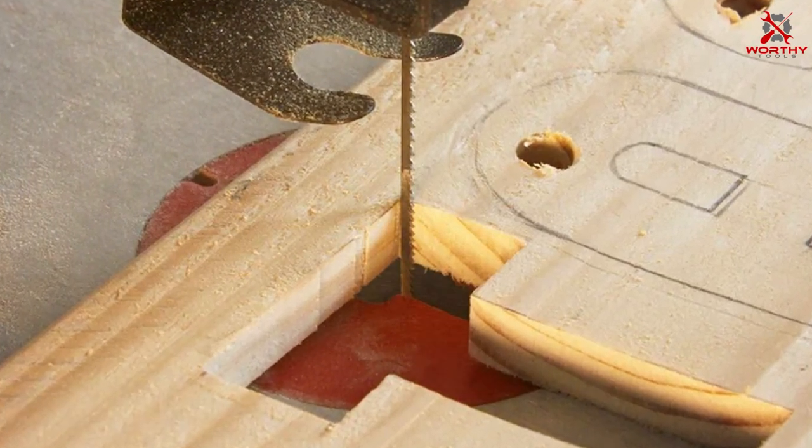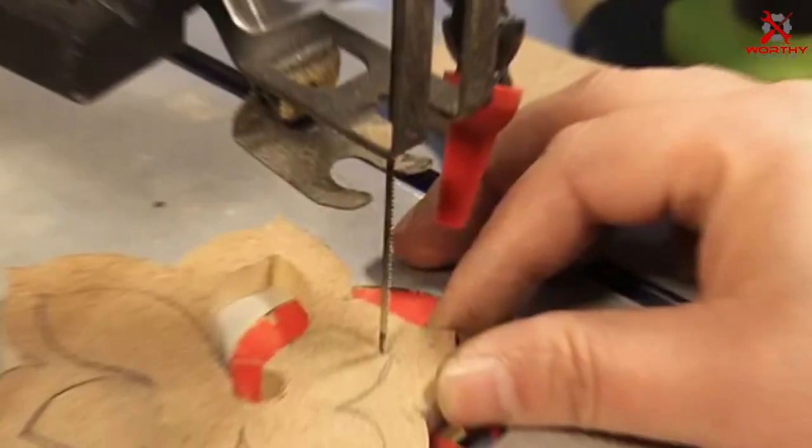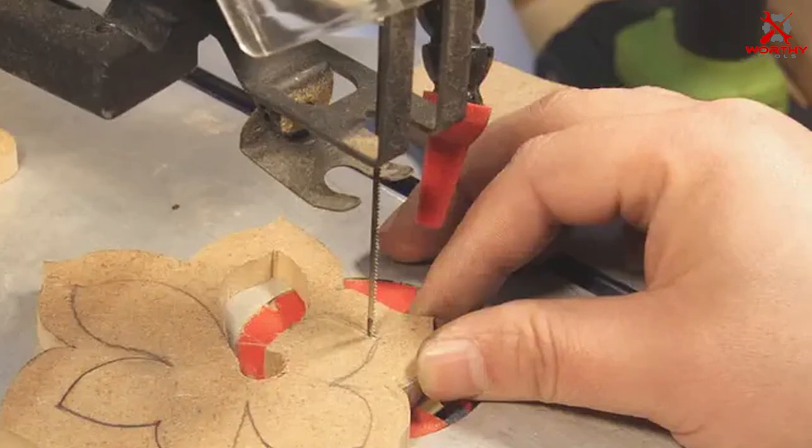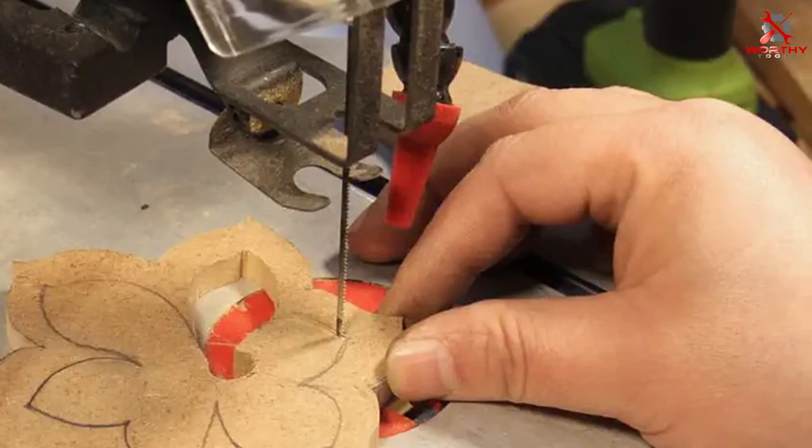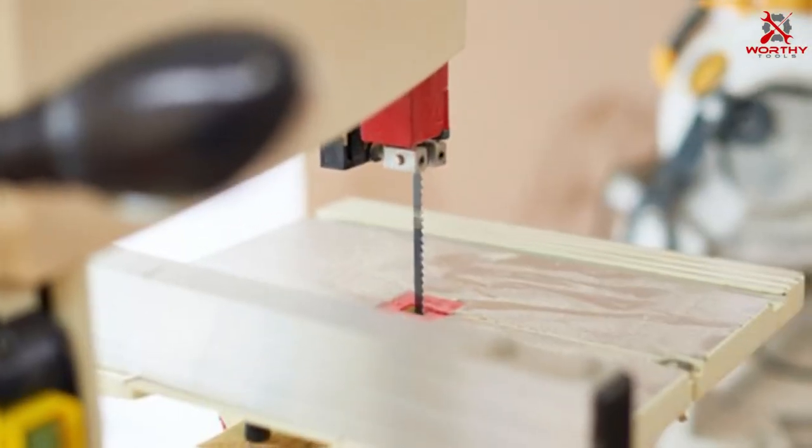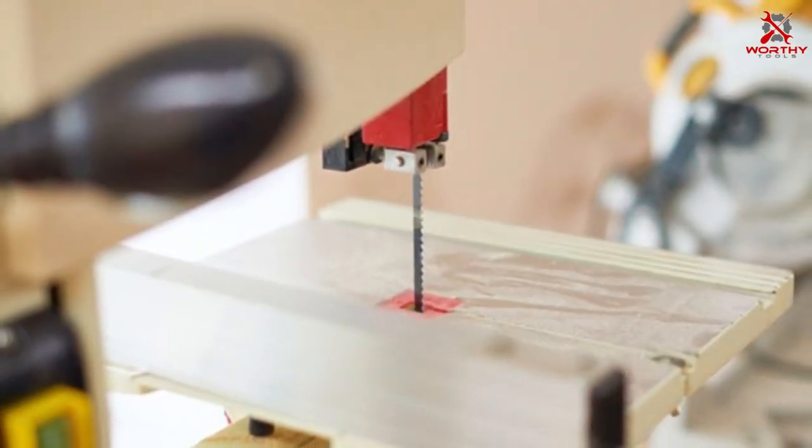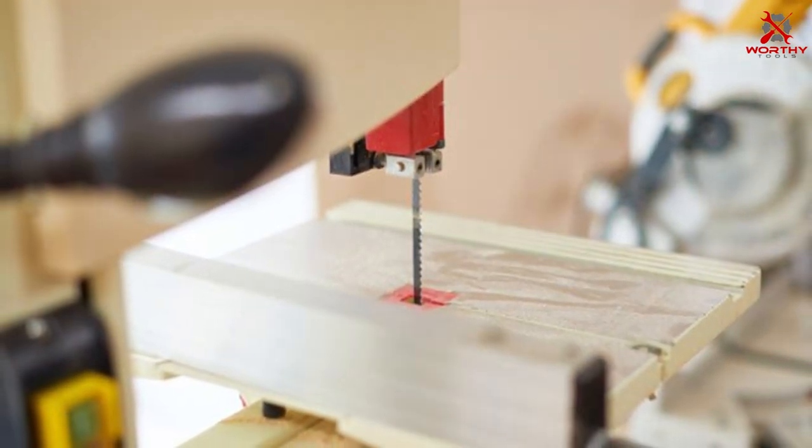Number six: EVO XBC5 Plain End Scroll Saw Blade Set 36-Pack. The EVO XBC5 plain end scroll saw blade set is a comprehensive collection that caters to the diverse needs of woodworkers. This 36-pack is meticulously curated to include a variety of blades, each designed to excel in different cutting scenarios. Whether you're sawing through hardwood, softwood, or various composite materials, this set ensures you have the right blade for the job.